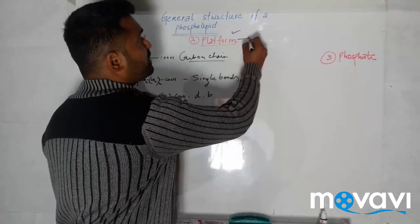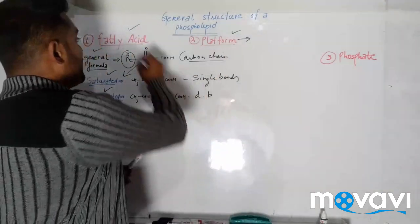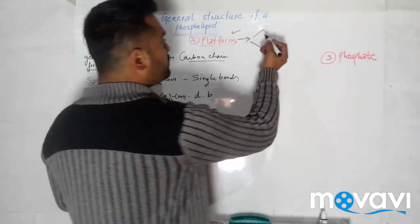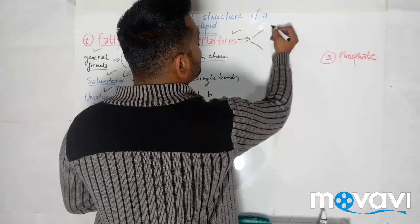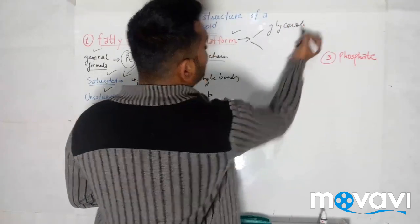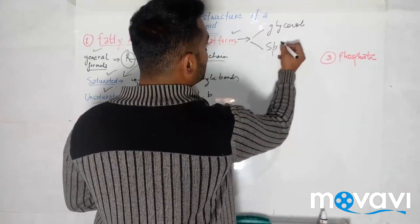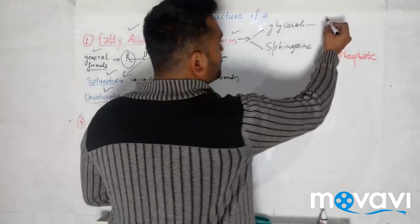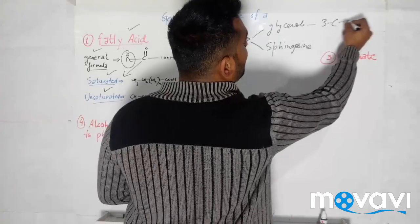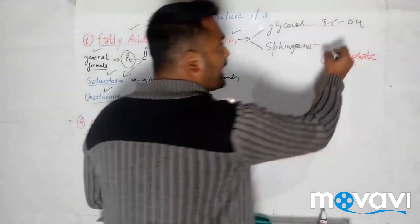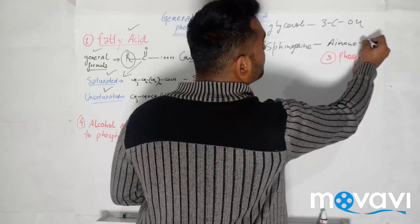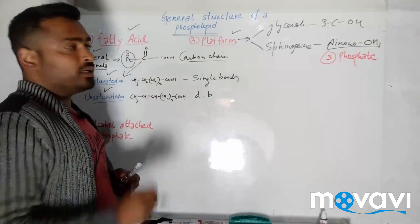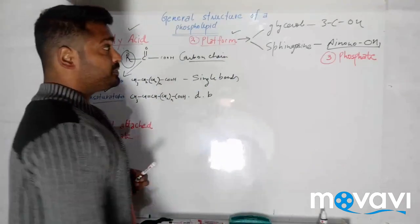The second component is the platform or backbone, to which fatty acids and other parts are attached. This can be of 2 types: first is glycerol and the second one is sphingosine. Glycerol is a simple 3-carbon alcohol. Sphingosine is an amino alcohol — it has the presence of an amino group along with an alcohol group, making it more complex.